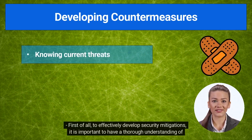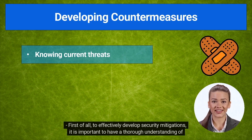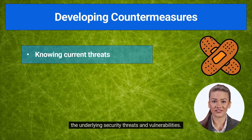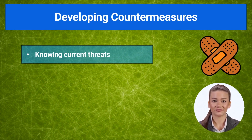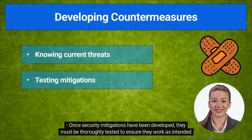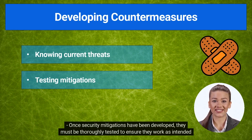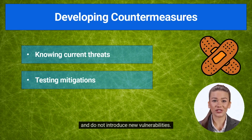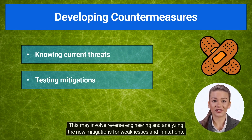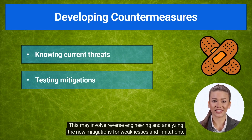To effectively develop security mitigations, it is important to have a thorough understanding of the underlying security threats and vulnerabilities. Once security mitigations have been developed, they must be thoroughly tested to ensure they work as intended and do not introduce new vulnerabilities. This may involve reverse engineering and analyzing the new mitigations for weaknesses and limitations.